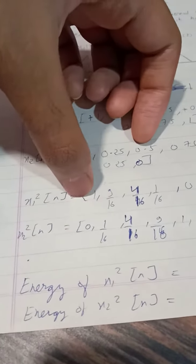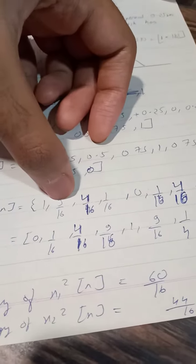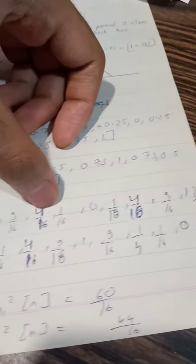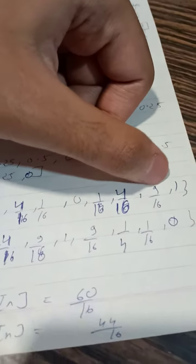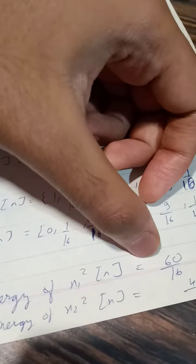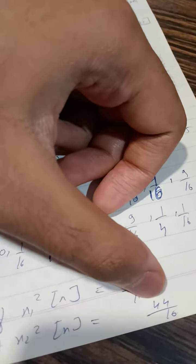Now to get the energy of x1 simply add all these terms. So when you add 1 plus 9 by 16 plus 4 by 16 plus 1 by 16 plus 1 by 16 plus 4 by 16 plus 9 by 16 plus 1 we get energy of x1n is 60 by 16 and energy of x2n is 40 by 16.